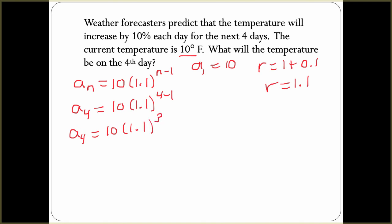For plugging in your calculator, sometimes it's easier, less chance of making a mistake, to actually take 4 - 1 to get to that 3. When you do this on your calculator, you will get 13.31 degrees Fahrenheit.